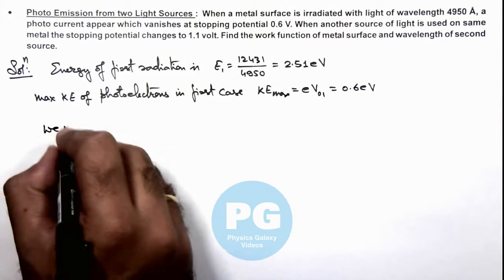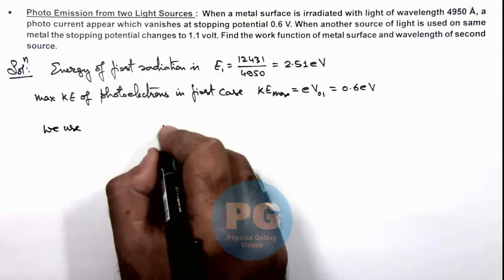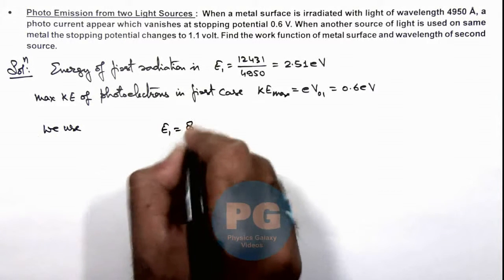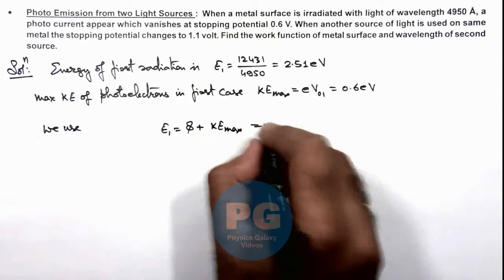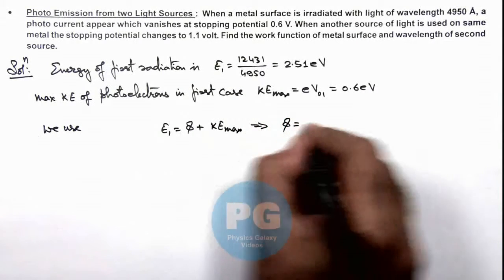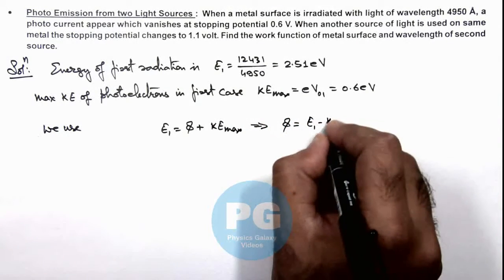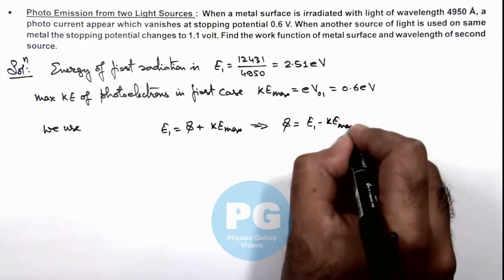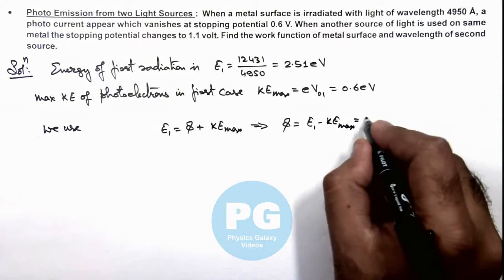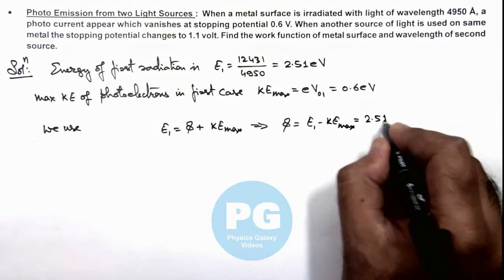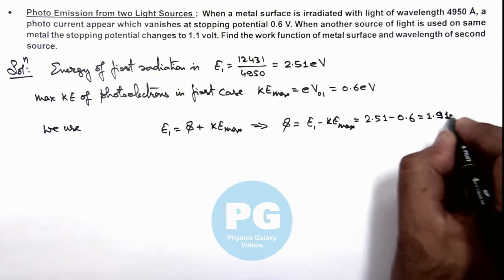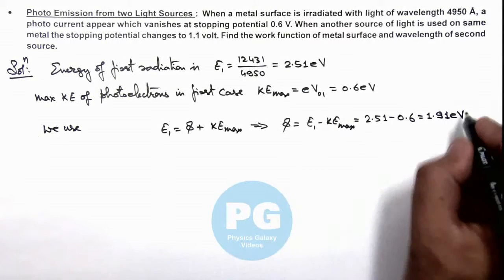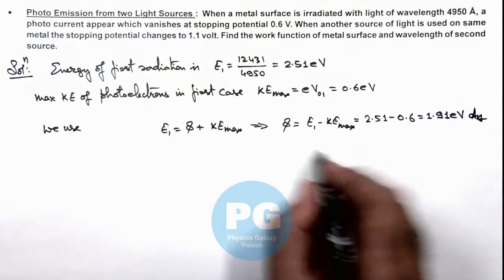We use the equation where E₁ equals the work function plus the maximum kinetic energy of photoelectrons, which directly results in the work function value as E₁ minus maximum kinetic energy. On calculation, this gives us 2.51 minus 0.6, which equals 1.91 electron volts. This is the first result of the problem for work function.